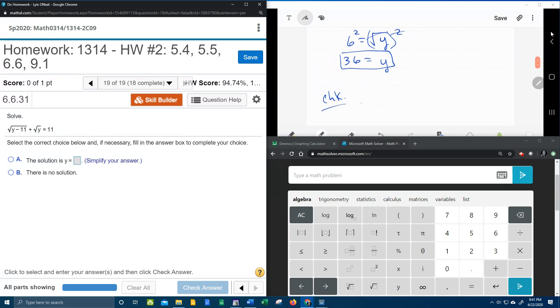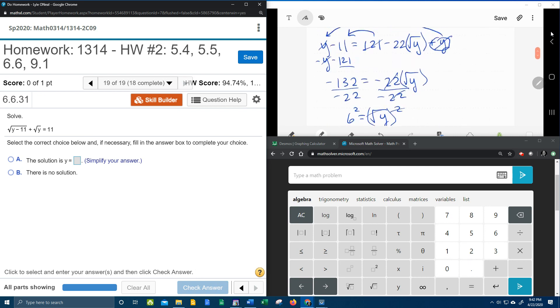Alright, here we go. So for the check, the original problem was square root of y minus 11, that'll be 36 minus 11, plus square root of y, but y is 36, equals 11. 36 minus 11 is 25. The square root of 25 is 5. The square root of 36 is 6, and 6 plus 5 does equal 11.